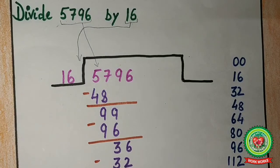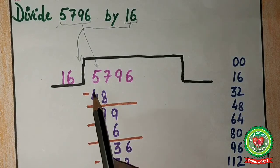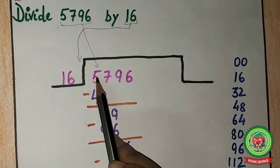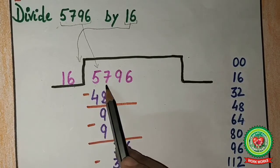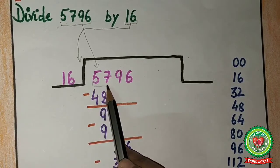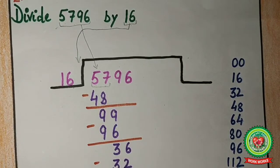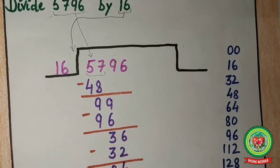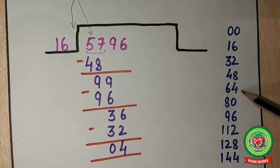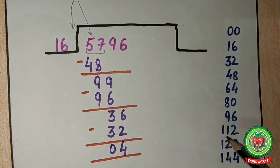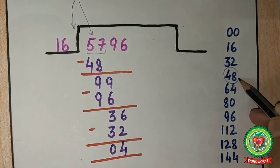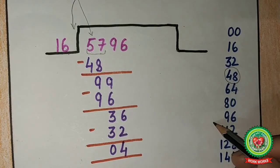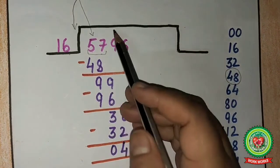First step is divide. The first digit is 5. Since 5 is smaller than 16, we can't divide with 16. So we take the next digit as well, making it 57. In the table of 16, 57 does not appear. So we need the number just less than 57. That is 48. 16 times 3 is 48. So 48 comes here and 3 comes up in the quotient.